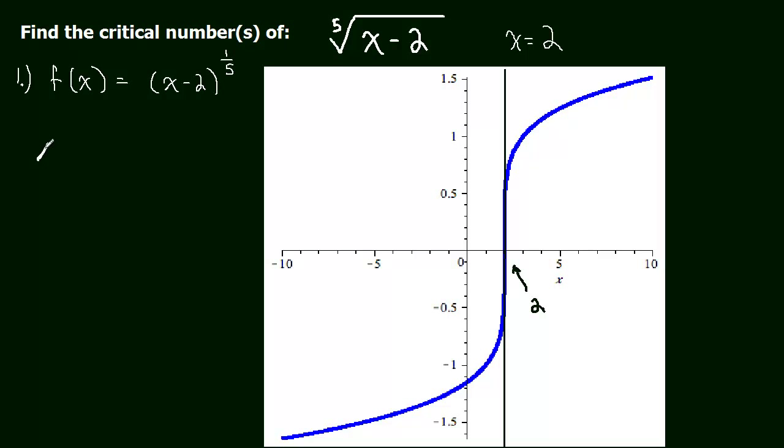So over here, if we have the change in y over the change in x, well, y is definitely changing. The function is moving up. So this is some number. But there's no change in x. If it's vertical, the x doesn't change at all. So it's some number over 0, which is, of course, undefined. You can't divide by 0. So the slope of a vertical line is undefined.